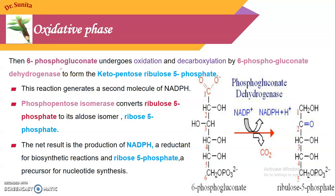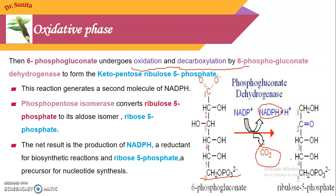In the second step, 6-phosphogluconate undergoes oxidation and decarboxylation. This 6-phosphogluconate again undergoes oxidation with the help of the dehydrogenase enzyme, phosphogluconate dehydrogenase. Here a second molecule of NADPH is formed, and a carbon dioxide molecule is removed, giving the product ribulose-5-phosphate. In the oxidative phase, one glucose molecule gives one CO2 and one ribulose-5-phosphate.